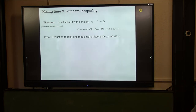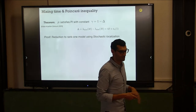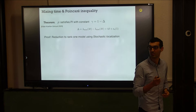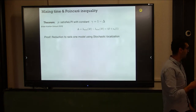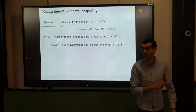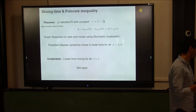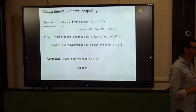The Dobrushin condition ensures spectral gaps — it's the standard thing you use to prove mixing at high temperature, but it doesn't work at low temperature. The critical temperature in this normalization is beta equals one. The result gives mixing up to beta equals one fourth. The reasonable conjecture is that you should have linear-time mixing up to beta equals one — the critical temperature — but this is still open.